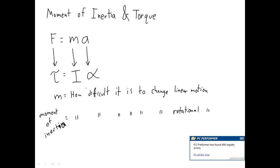Moment of inertia, written with the Greek letter I. What determines moment of inertia? There are actually three things that go into moment of inertia. The first is just raw mass. If you have two things exactly the same shape, exactly the same pivot point, but different mass, the one with more mass will be more difficult to rotate. Think of it like a wooden bar versus an iron bar — the iron one is going to be more difficult to rotate, simply because it has more mass. That's the first thing that determines moment of inertia.